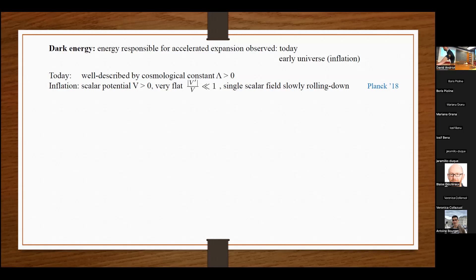In the early universe, we rather tend to describe it with a scalar potential V, which is also positive and very flat. This means the first derivative V prime compared to V is much less than one. And observations by Planck validate having a model of just a single scalar field which is slowly rolling down the flat potential. This is in very good agreement with observations.